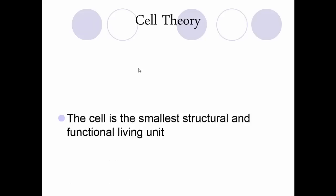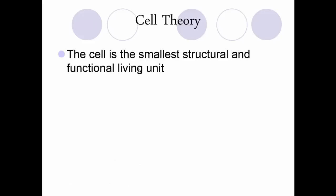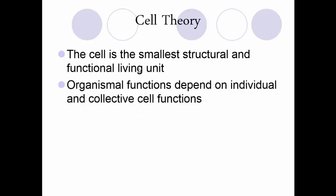When we talk about the cell, we also talk about something called the cell theory. The first statement says the cell is the smallest structural and functional living unit — basically the definition of a cell, the smallest thing that can live independently. The second statement states that organismal functions depend on individual and collective cell functions, meaning an organism made of more than one cell depends on the cells functioning individually and working together for the common goal of keeping that organism alive.